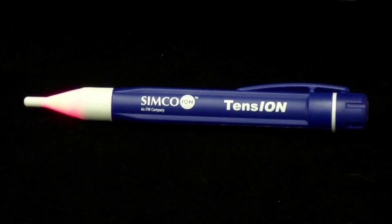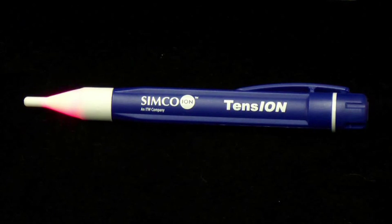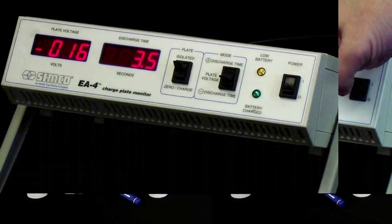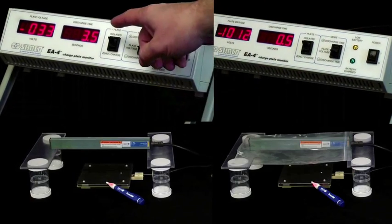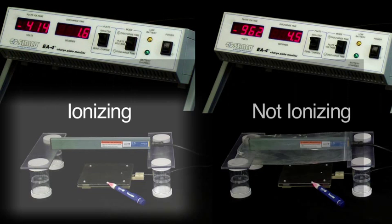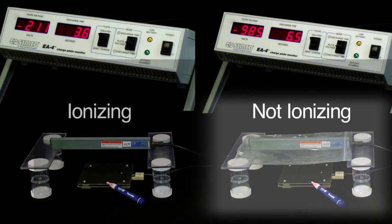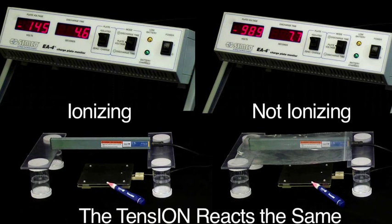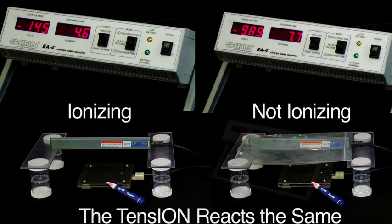As we've shown, the tension reacts to voltage only, not ionization. We prove this by putting it below a static bar while creating ionization, then we put it under the same bar but blocked ionization. In both instances, it reacts the same, proving that the ionization created by the static bar has no effect on the voltage detector.